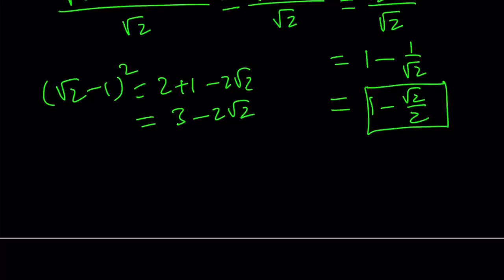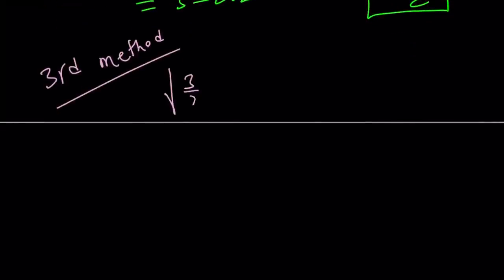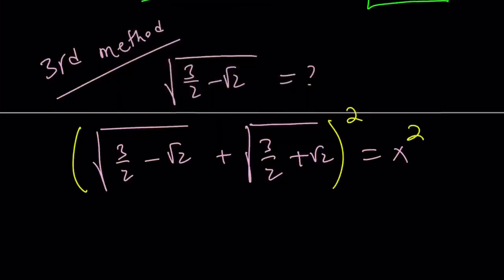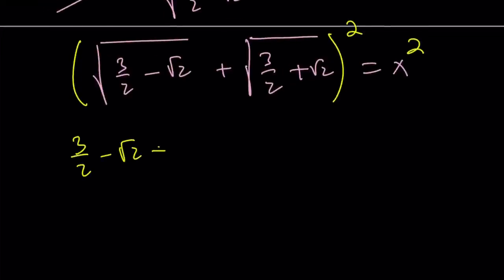Let's look at the third method. Our expression is √(3/2 minus √2). To simplify this, I'll think about the conjugate — the conjugate is formed by changing the sign. I'm going to add these two conjugates and set it equal to x, then square both sides. From the square of a sum on the left-hand side, we get (3/2 minus √2) + (3/2 + √2) + 2 times √(9/4 minus 2), which equals x².